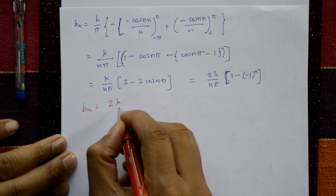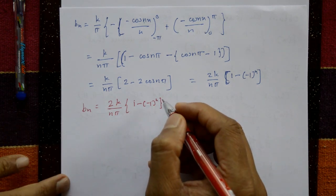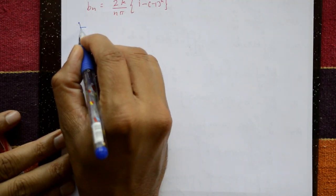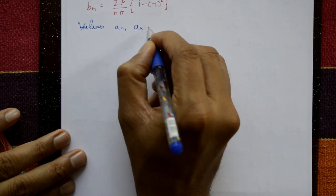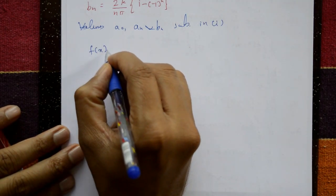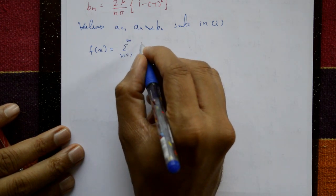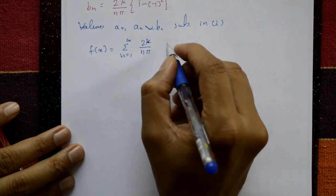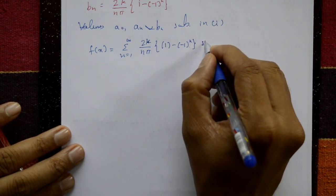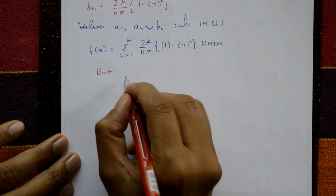Now substitute the values a₀, aₙ, and bₙ into equation 1. Since a₀ is 0 and aₙ is 0, only bₙ remains. So f(x) equals summation n=1 to infinity of bₙ sin(nx), where bₙ is 2k/(nπ) times (1 minus (minus 1)ⁿ).